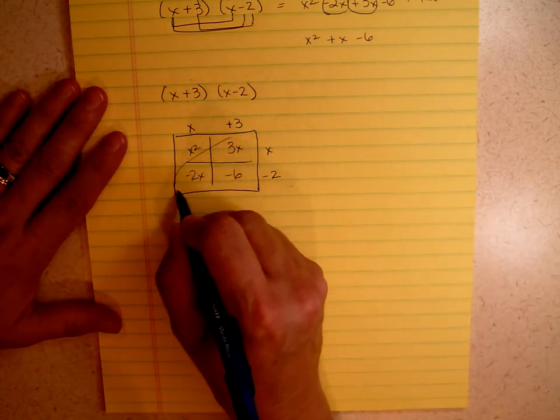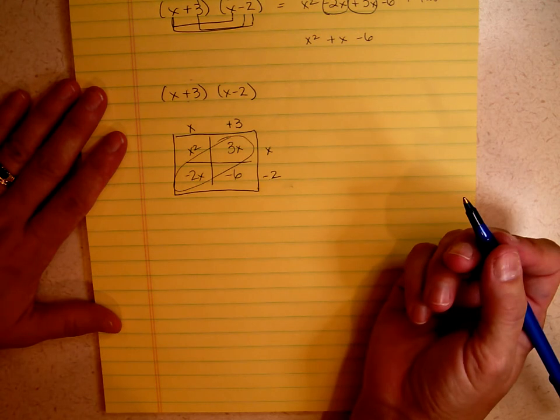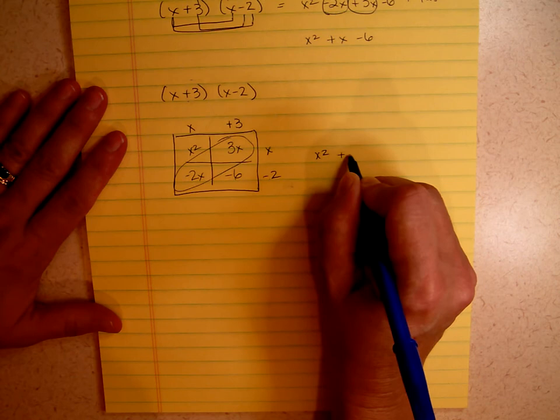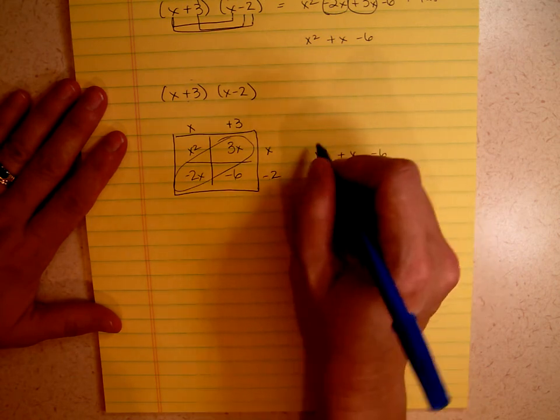Now you can see that these two elements are common. They're like terms. We're going to write x squared plus x minus 6. How did I get that plus x?